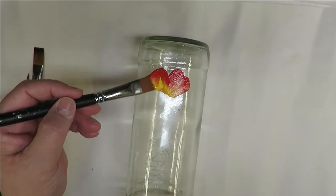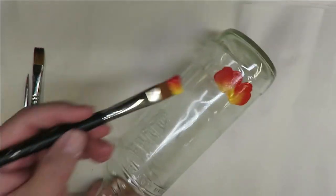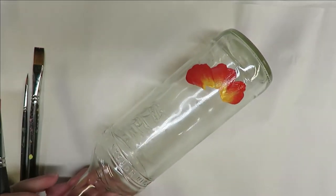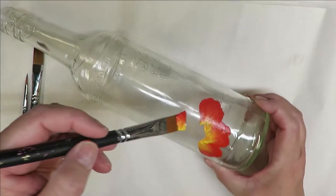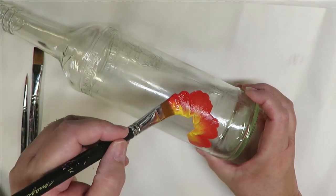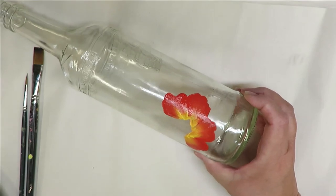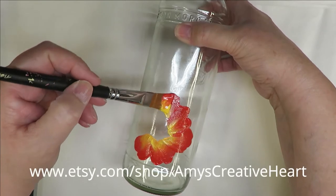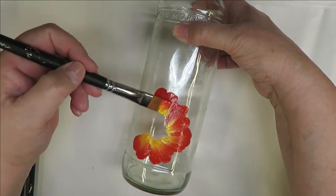Then just continue doing a similar shape. This is the first layer. All I'm doing is putting the brush down, I can do a blending stroke if I want, and I'm just wiggling it up and down and pulling back. Very simple.